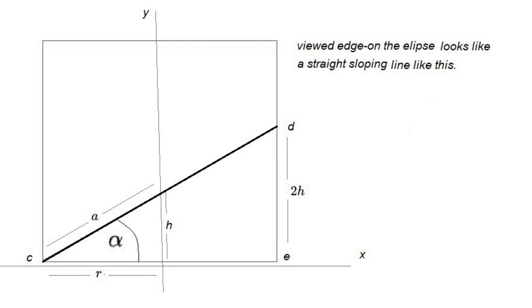Viewed edge-on, the ellipse looks like a straight sloping line, like this.